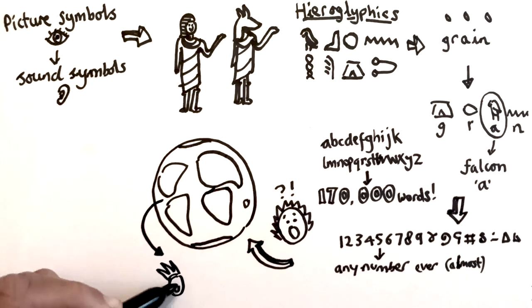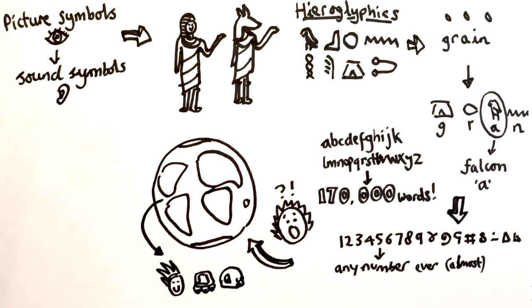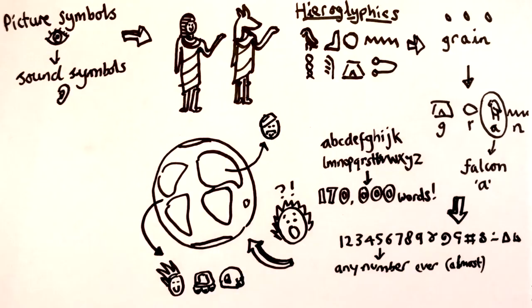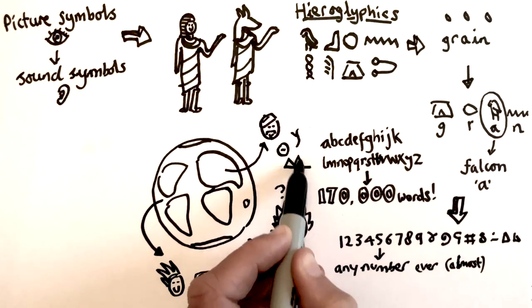Different alphabets, different kinds of writing using sound symbols or phonics, popped up all over the world, from Mesoamerica to China. They were often used alongside picture symbols, which helped to add meaning.